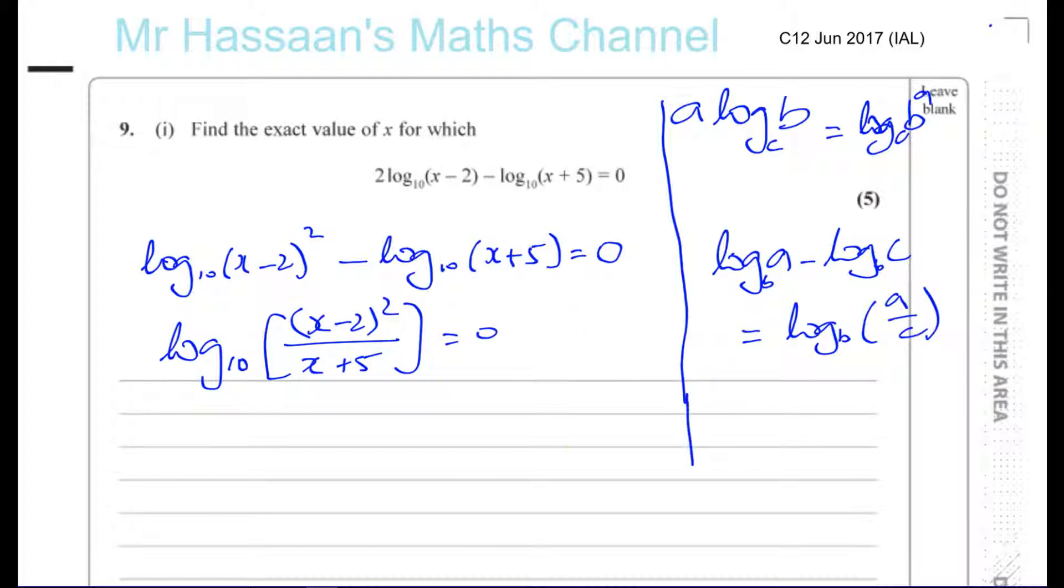Now, I can now use a definition of logarithms to complete this. So now we know that the log to the base A of B equals C can be written in index form as this is the base and this is the power and this is the result. So log to the base A of B equals C means A to the power of C equals B.